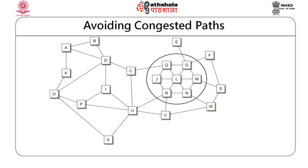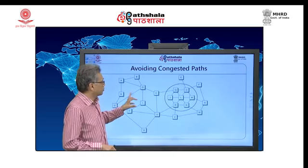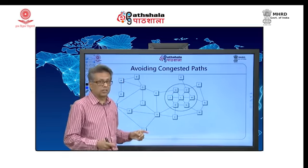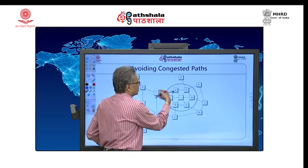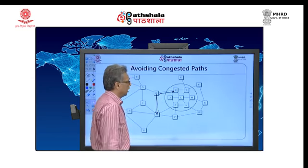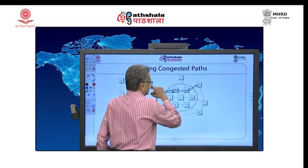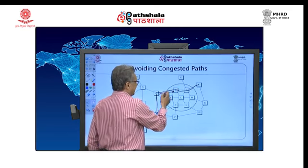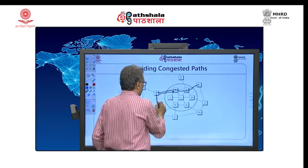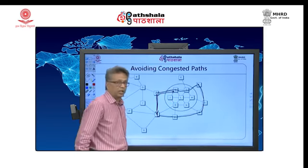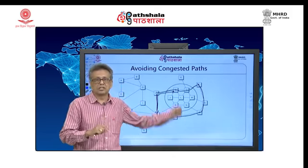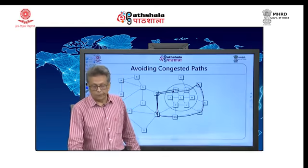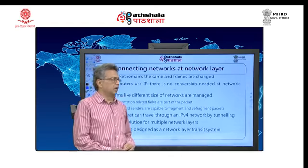Avoiding congested paths is another critical network layer service. Once you learn about a congested path — for example, if a queue is not responding in time — you find another route. If C is sending to F using the normal route and getting delayed responses, it will start traveling on another path and eventually reach the destination. This freedom of choosing paths is given to routers to handle congestion, and that is the power of connectionless routing.